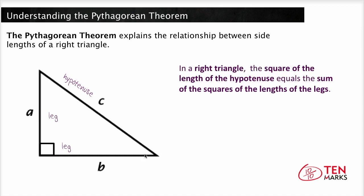The Pythagorean Theorem states that in a right triangle, the square of the length of the hypotenuse equals the sum of the squares of the lengths of the legs. If the hypotenuse is c and the legs are a and b, you can express this relationship in the equation c squared equals a squared plus b squared.